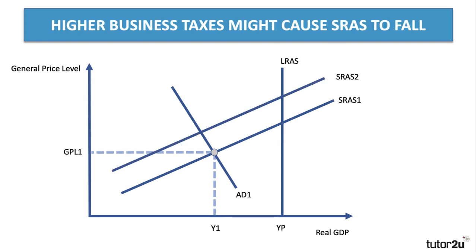So fiscal policy does impact short-run aggregate supply. For example, if there was an increase in import tariffs or an increase in carbon taxes — both of which form part of fiscal policy — aggregate supply would shift to the left: SRAS1 shifts to SRAS2, and other things being the same, that would cause an increase in the general price level and a fall in real output.